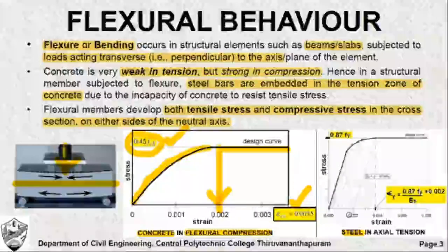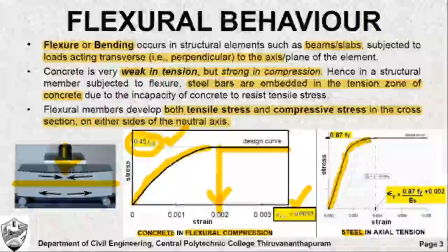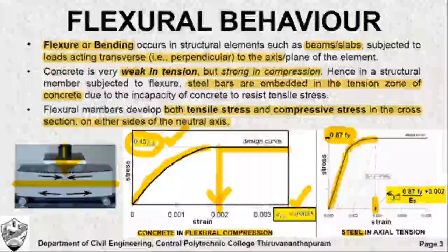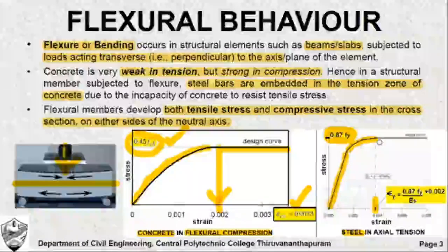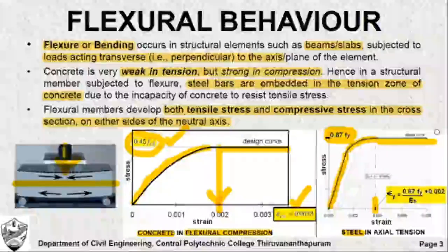Similarly, the design strength of steel: shown here is a typical design curve of HYSD bars. As you increase the load the stress-strain behavior is linear initially, followed by which it becomes non-linear and reaches the yield point. The design yield strength of steel is 0.87 fy. The yield strain is given by 0.87 fy divided by Es plus 0.002. After this value of yield strain, the steel undergoes large deformation without increase in stress, showing its ductile nature.